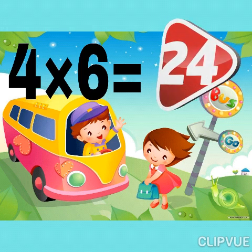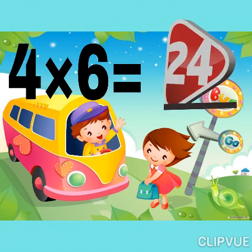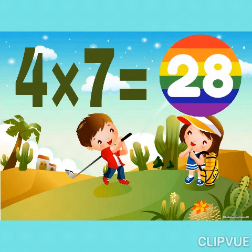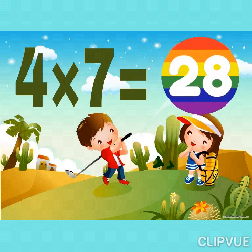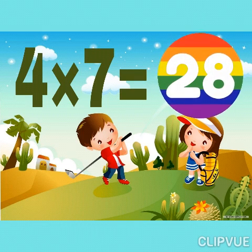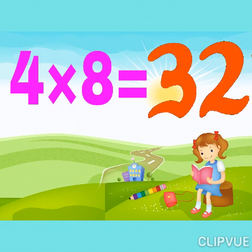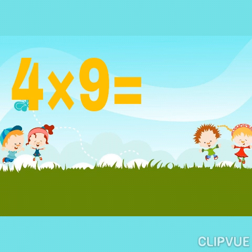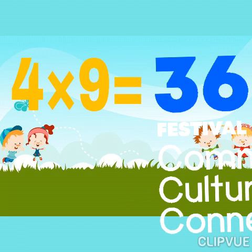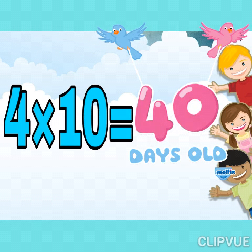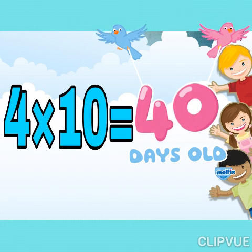Four sixes are twenty-four. Four sevens are twenty-eight. Four eights are thirty-two. Four nines are thirty-six. Four tens are forty.